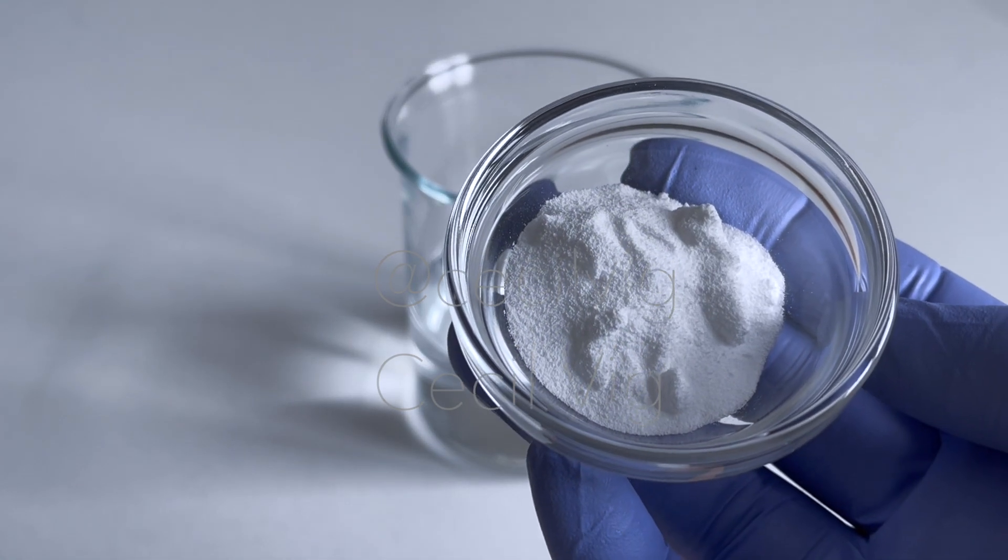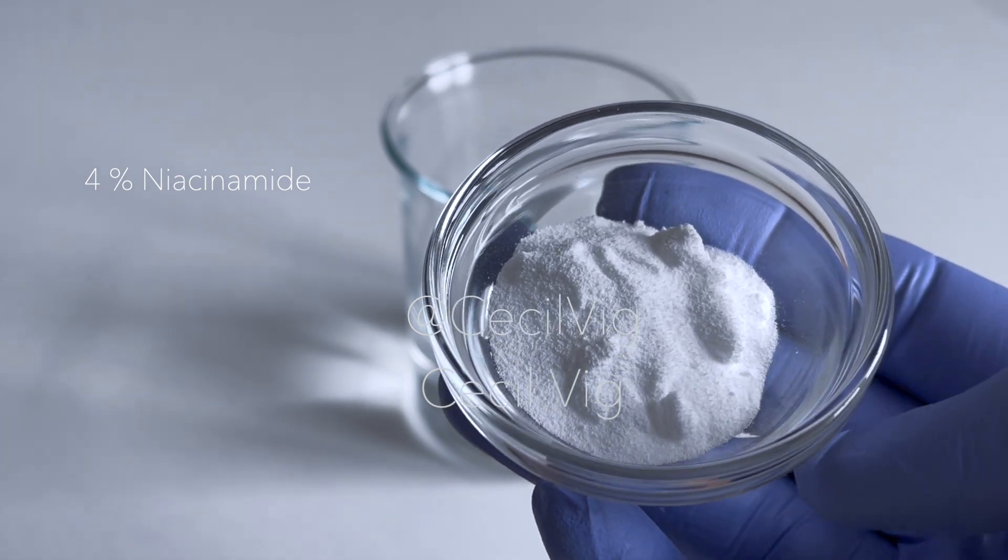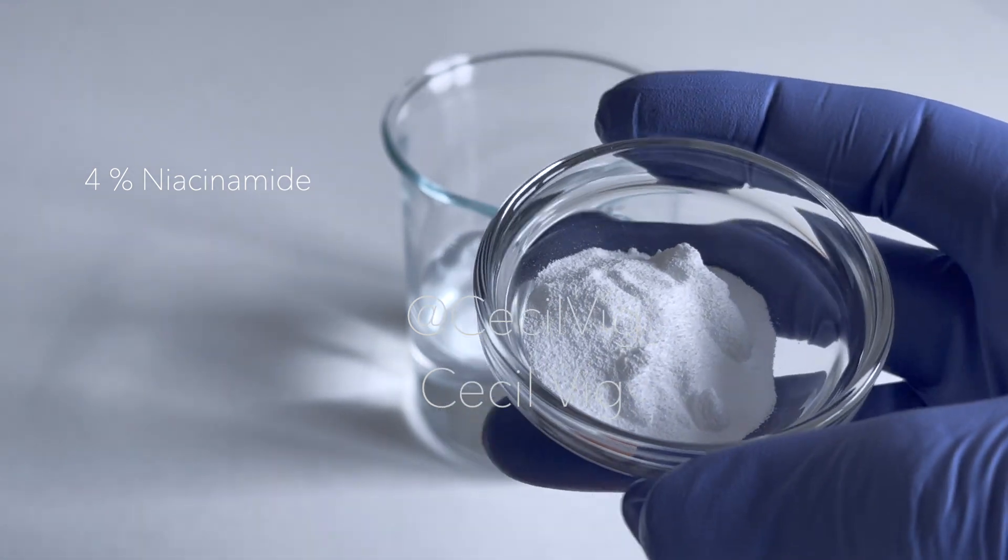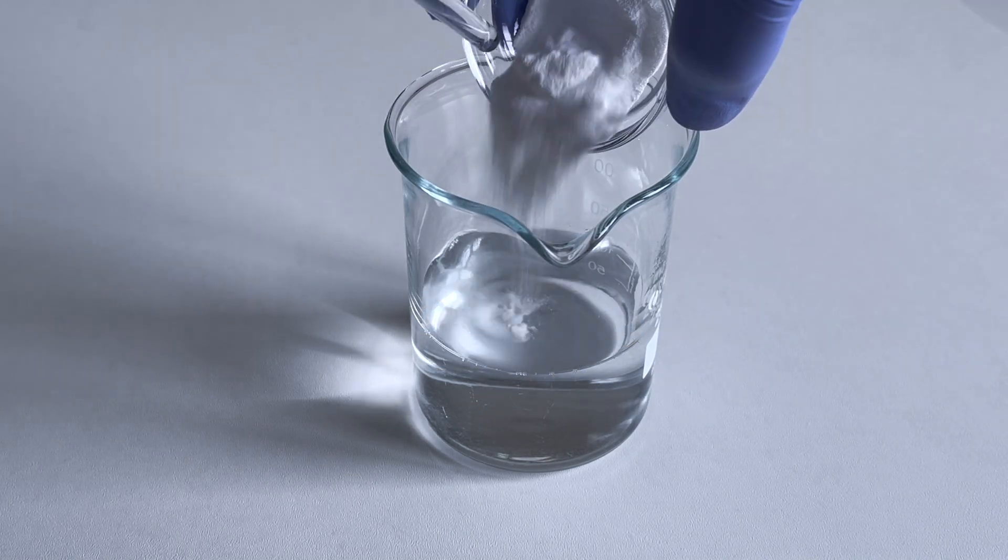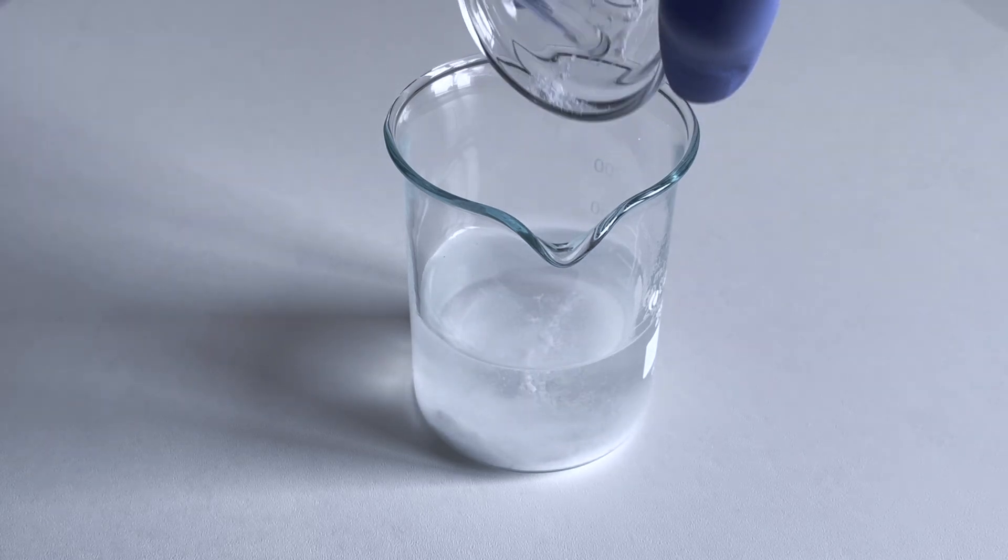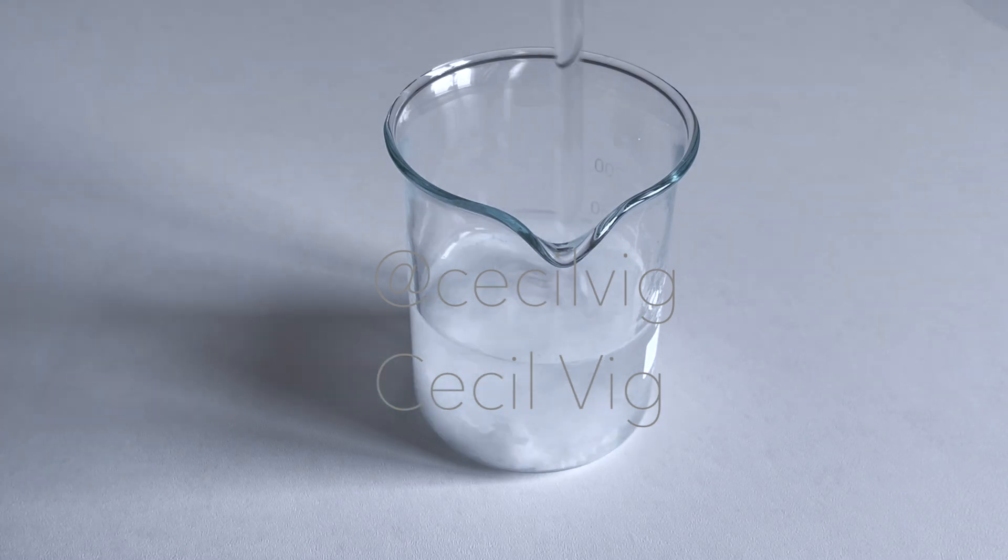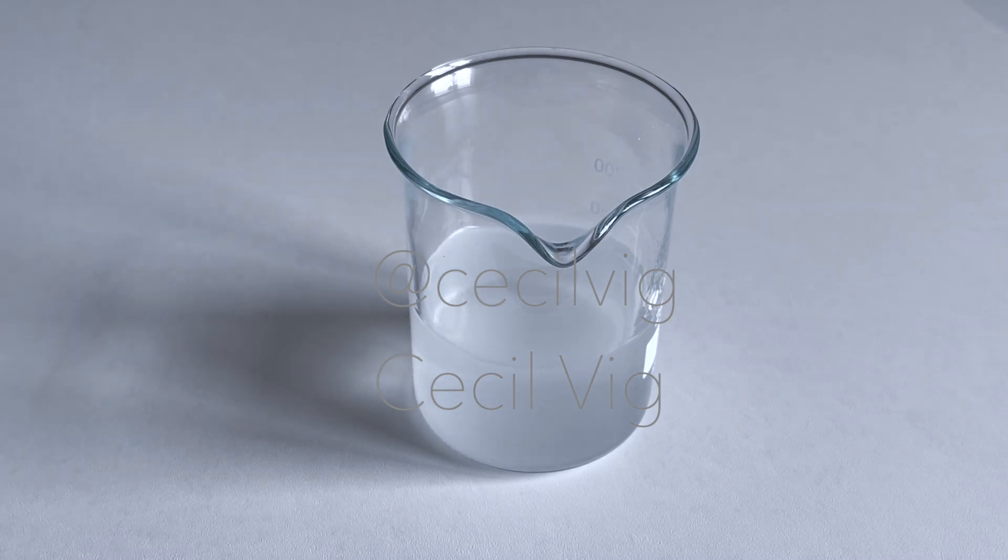The next ingredient I add to the water is the niacinamide. Niacinamide is a form of vitamin B3, niacin, used in formulations to repair the skin barrier, brighten the complexion, reduce the appearance of wrinkles, reduce transepidermal water loss, improve skin elasticity, and reduce inflammation. After adding the niacinamide to the water, I mix until it dissolves.